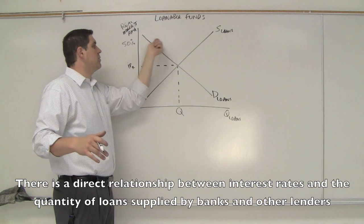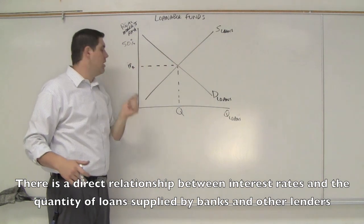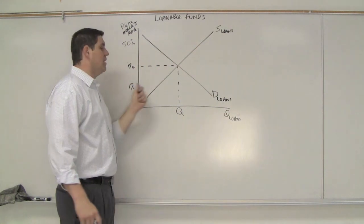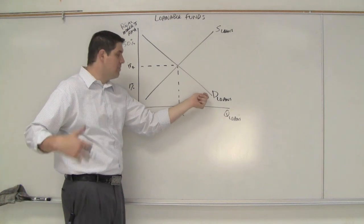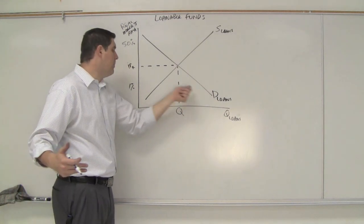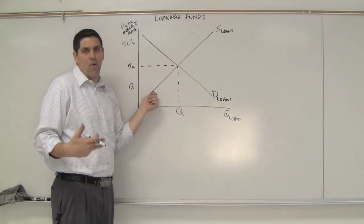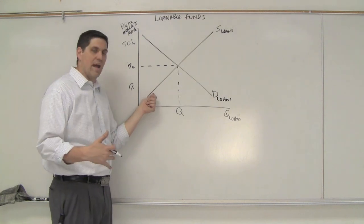If the interest rate was up here at 50%, we'd have a surplus. Down here, let's say 1%. At 1%, you want to borrow a whole lot of money. The demand for loans would be very high, but the people who want to supply those loans would be very few. I don't want to loan money to you with only a 1% actual return.